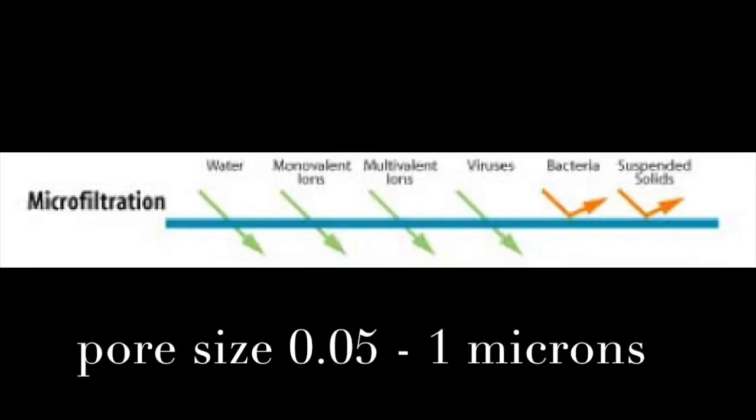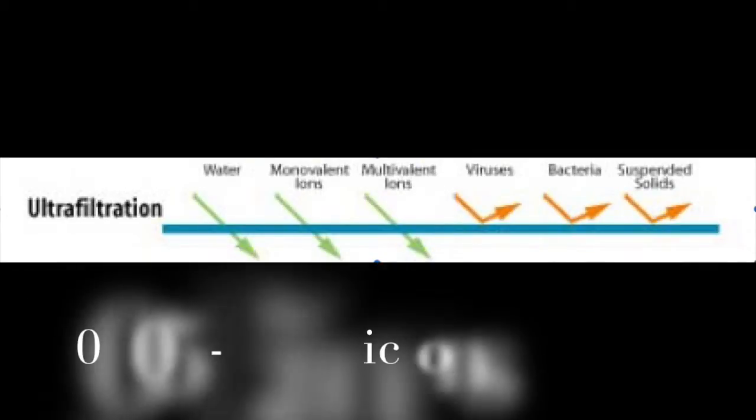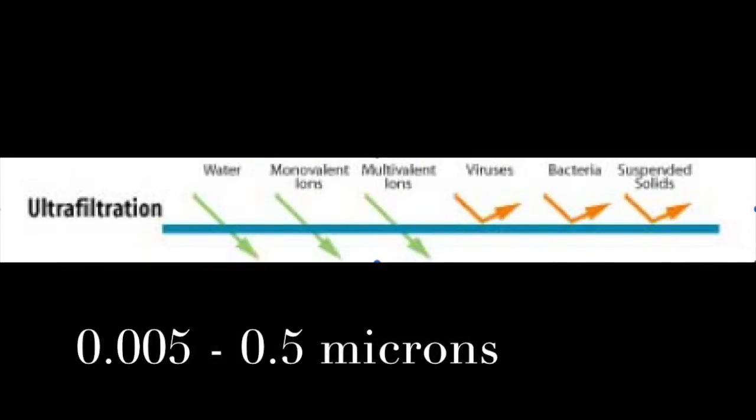Then there's ultrafiltration, which is 0.005 to 0.5 microns. All substances removed by microfiltration, plus the removal of humic acids and some viruses.